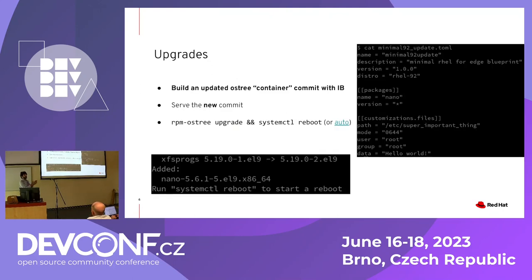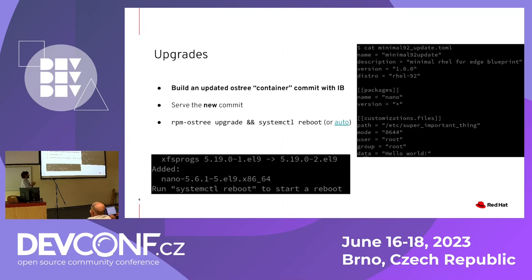Now this is day-two operation. The device needs an upgrade. There is a blueprint that creates an upgrade — still an OSTree container commit built using Image Builder. In this example I just added nano. We serve this commit, build the upgraded OSTree commit, and then run RPM-OSTree upgrade and reboot. Once we run RPM-OSTree upgrade, we get output saying just run 'systemctl reboot' and everything is going to be fine — you'll boot into the next version of the operating system.